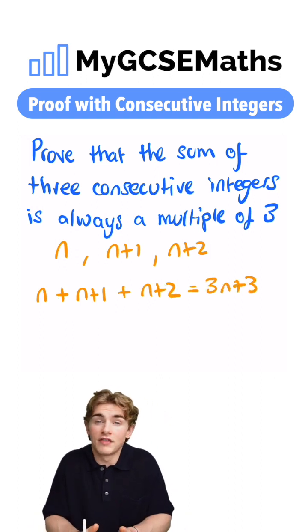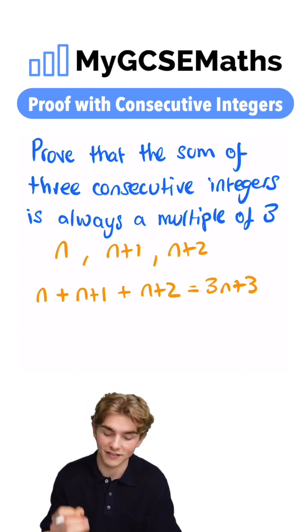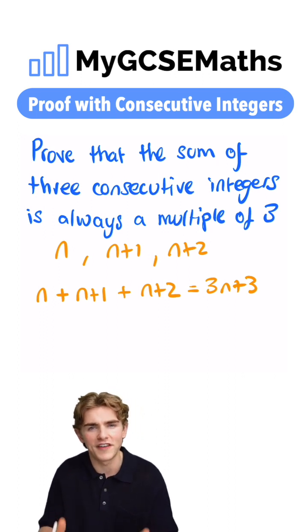Now, when it comes to showing that this is a multiple of three, we just need to show that it has a factor of three. How can we do that? We can factorize it.